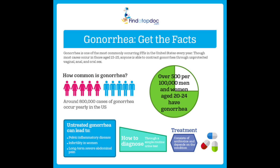Gonorrhea is curable with antibiotics — not penicillin, but there are many other antibiotics capable of curing it. If untreated, it can cause sterility, premature and stillbirths, infant pneumonia, and eye infections which can lead to blindness. It can also cause epididymitis in men and pelvic inflammatory disease in women. In terms of incidence, there are about 300,000 new cases of gonorrhea each year in the United States. In terms of prevalence, there are currently about 1.2 million people infected in the U.S. population.